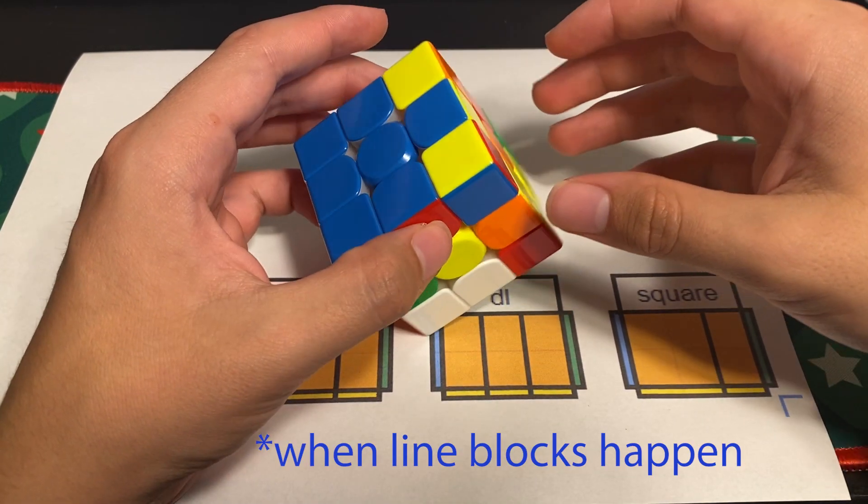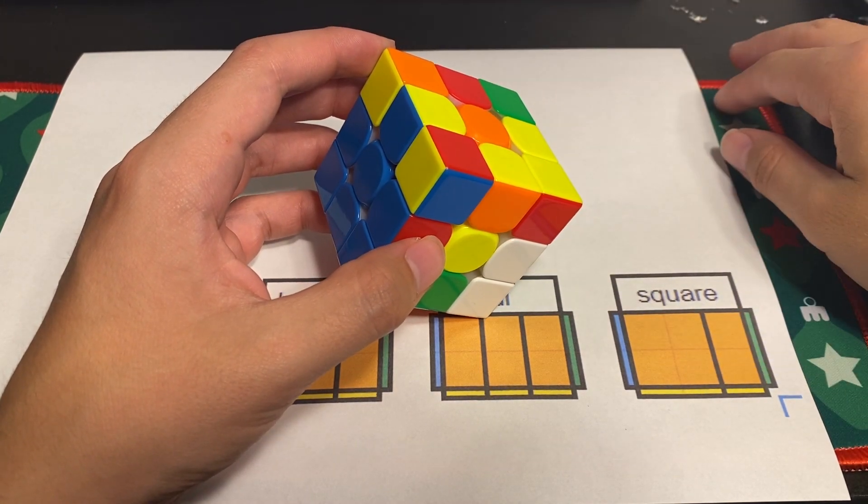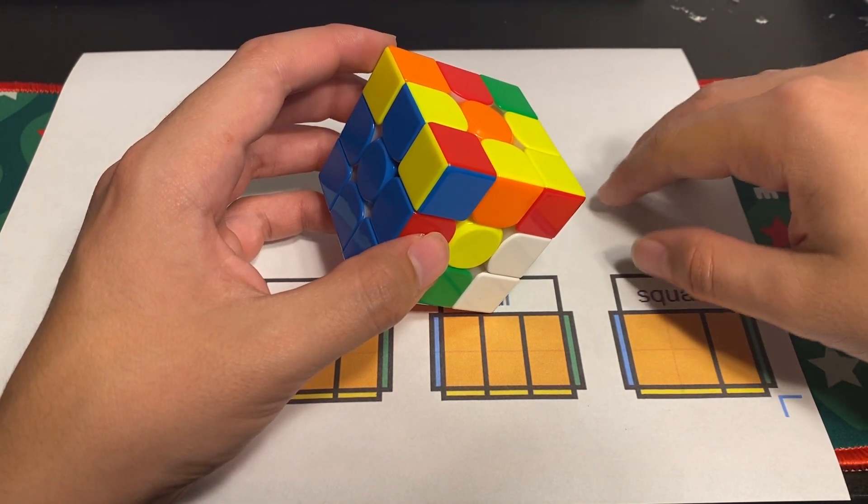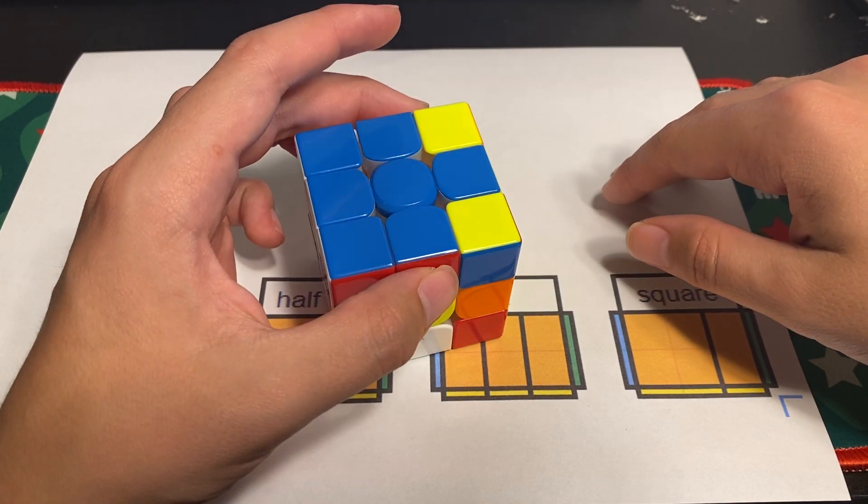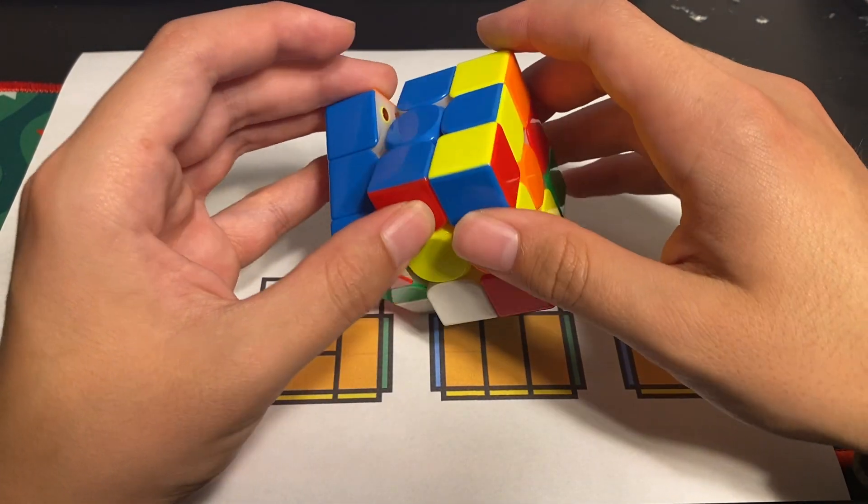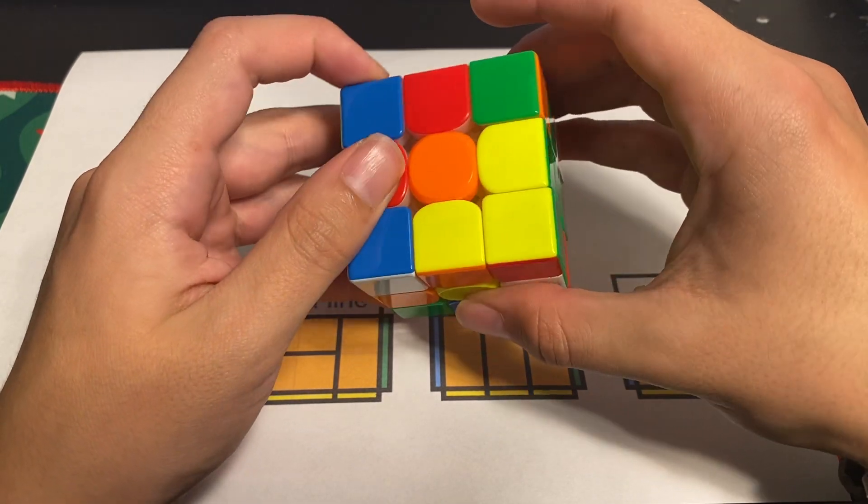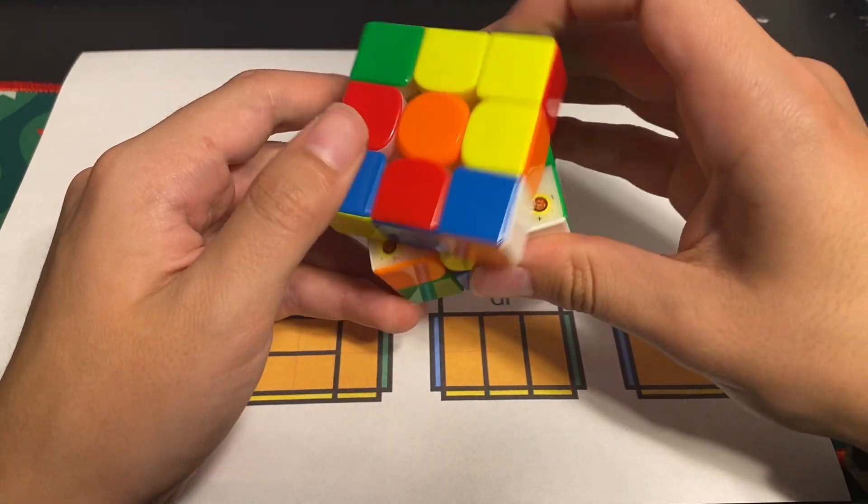Recognizing when line blocks happen takes more experience than the others. You really just have to experiment to see how you can set up to line blocks and what are giveaways for when there are line blocks.